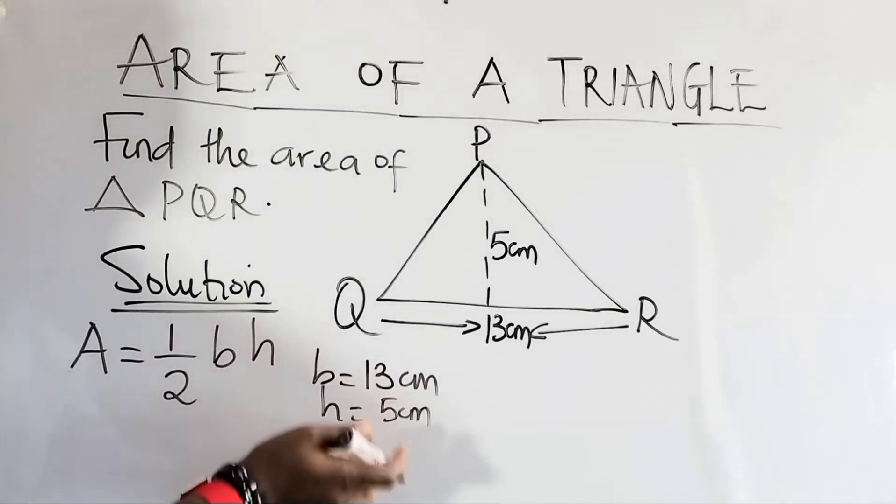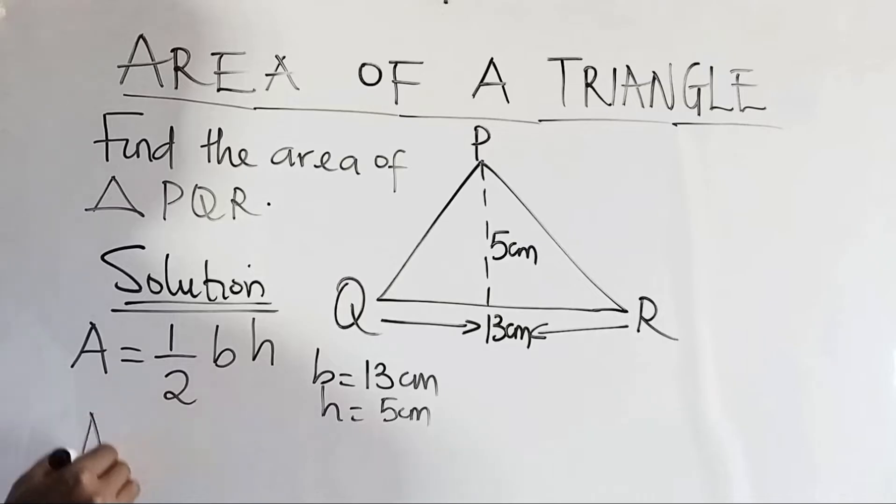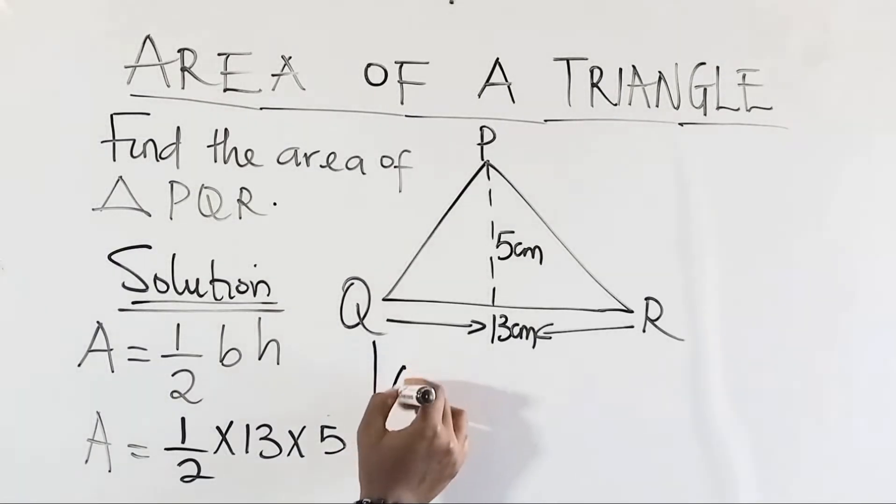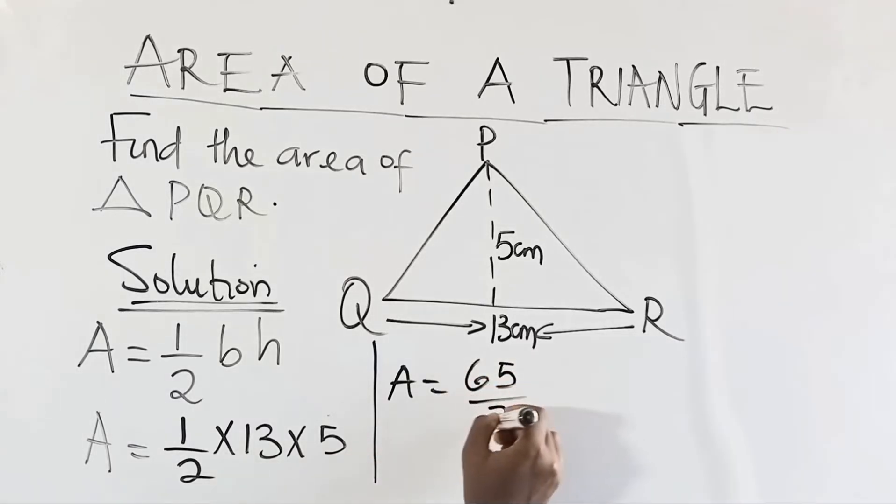So what we need to do now is simply to substitute these values into this formula. So we have the area equals 1 over 2 times the base, which is 13, times the height, which is 5. So now we have our area here equals 1 times 13 times 5 would give us 65 all over 2. So the area equals 32.5 centimeters square as the area of triangle PQR.